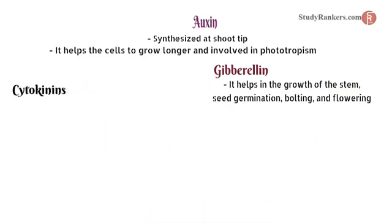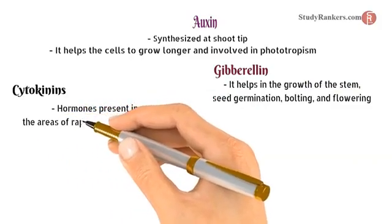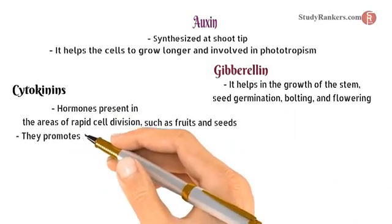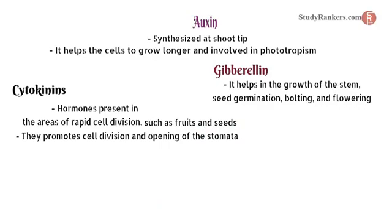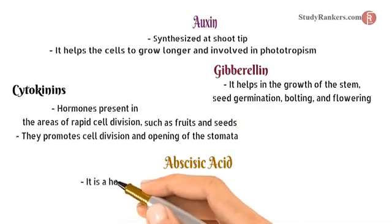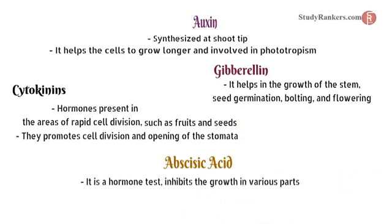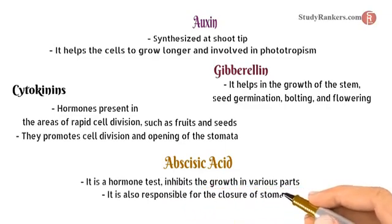Cytokinins are hormones present in areas of rapid cell division, such as fruits and seeds. They promote cell division and opening of the stomata. Abscisic acid is a hormone that inhibits growth in various parts and is also responsible for the closure of stomata.